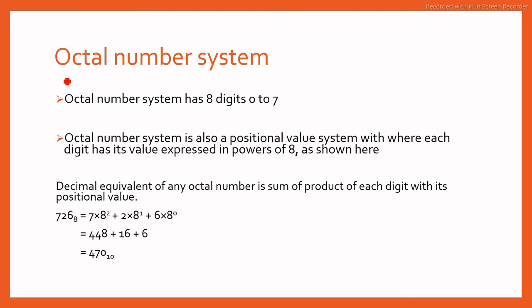Next we have octal number system. Octal means 8, having 8 digits from 0 to 7. We will multiply and take sum of product of each digit. This is how to convert any number to decimal.